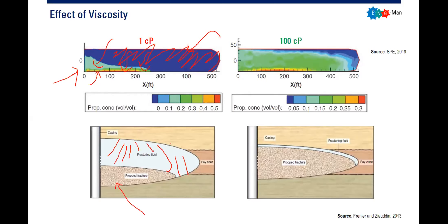If you have a high-viscosity fluid, it can transport the proppant — it can lift the proppant and place it quite well inside your fractures. You will still have some proppant settlement at the bottom, but it will be distributed much better compared to a low-viscosity fluid. The fluid will transport your proppant deep inside your fractures, giving you better proppant placement. That's the key role of viscosity.